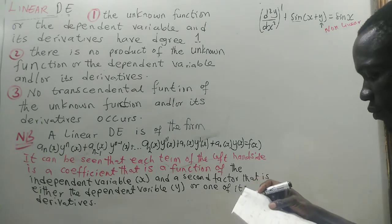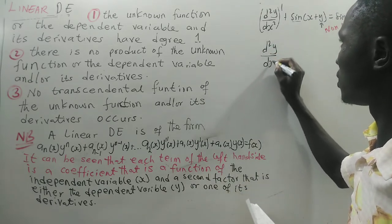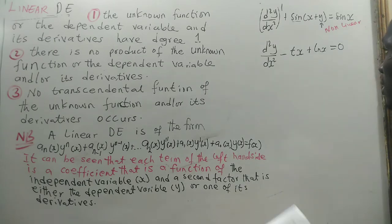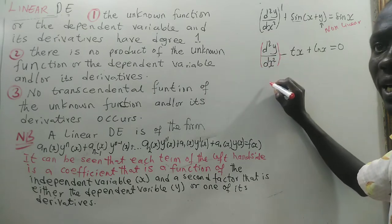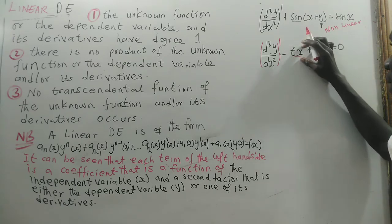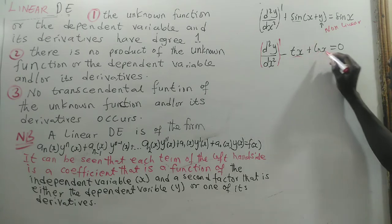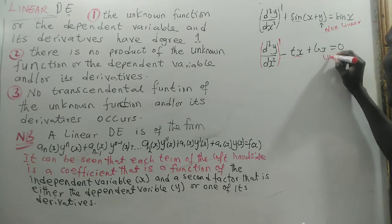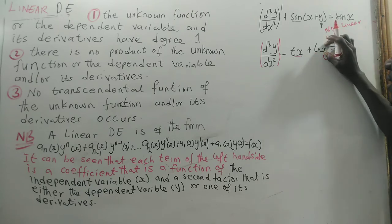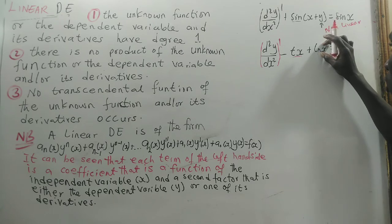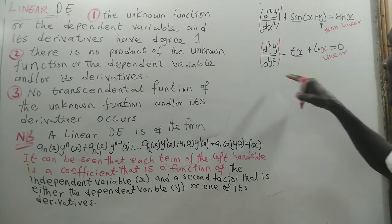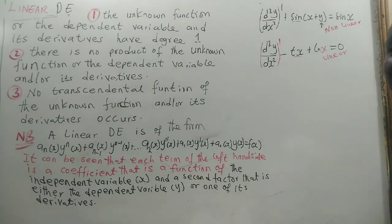Example 2: Consider d²y/dx² - tx + sin x = 0. The only derivative here has degree 1, so condition 1 is satisfied. Here we have t times x, which is the independent variable. We also have sin of the independent variable x. Since the transcendental function contains x, not the dependent variable y, this is a linear differential equation. If we replaced x with y inside sin, it would become nonlinear.